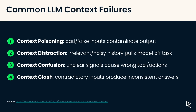In production systems, context is very powerful but it can also be quite tricky. There are four common failures that we need to watch out for: context poisoning, context distraction, context confusion and context clash. We will look at each of these in detail — what it looks like, why it happens and how to prevent it.